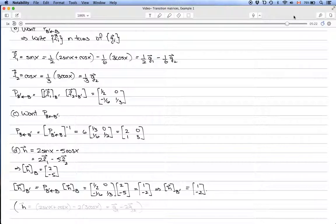And we can verify this by noting that h equals (2 sin x plus cos x) minus 2 times 3 cos x, which is just equal to g_1 minus 2 g_2, which is exactly what we got when we calculated it the previous way.